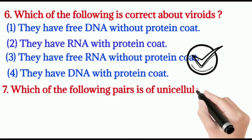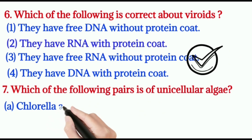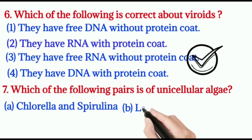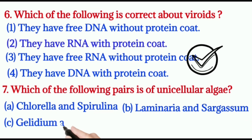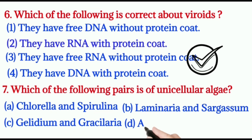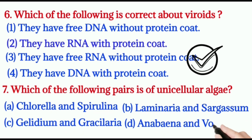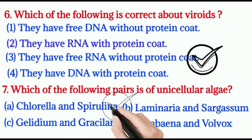Question number seven: which of the following pairs is unicellular algae? A: Chlorella and Spirulina, B: Laminaria and Sargassum, C: Gelidium and Gracilaria, D: Anabaena and Volvox. Others contain multicellular algae. Only one pair contains only unicellular algae — that is A, Chlorella and Spirulina. Right option is A.